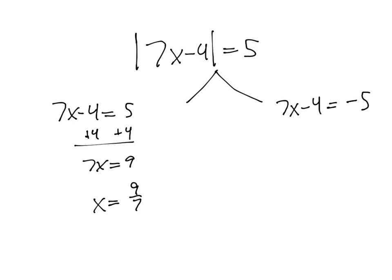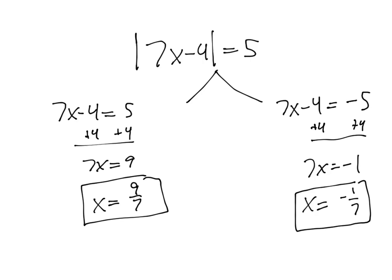And then the second equation, again, I'm going to add 4. I get 7x equals negative 1 divided by 7. We get x equals negative 1 seventh. So both of these are the solutions.